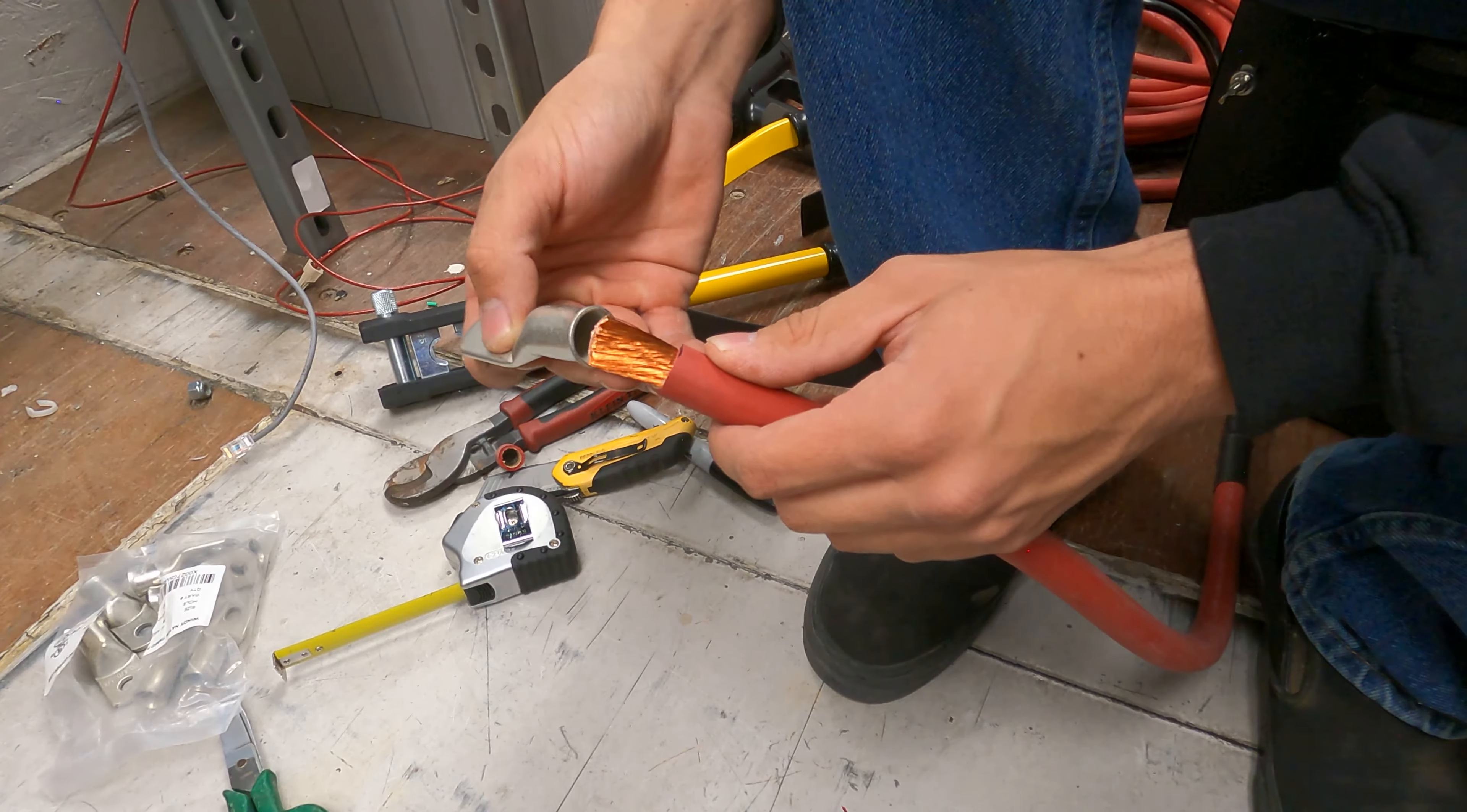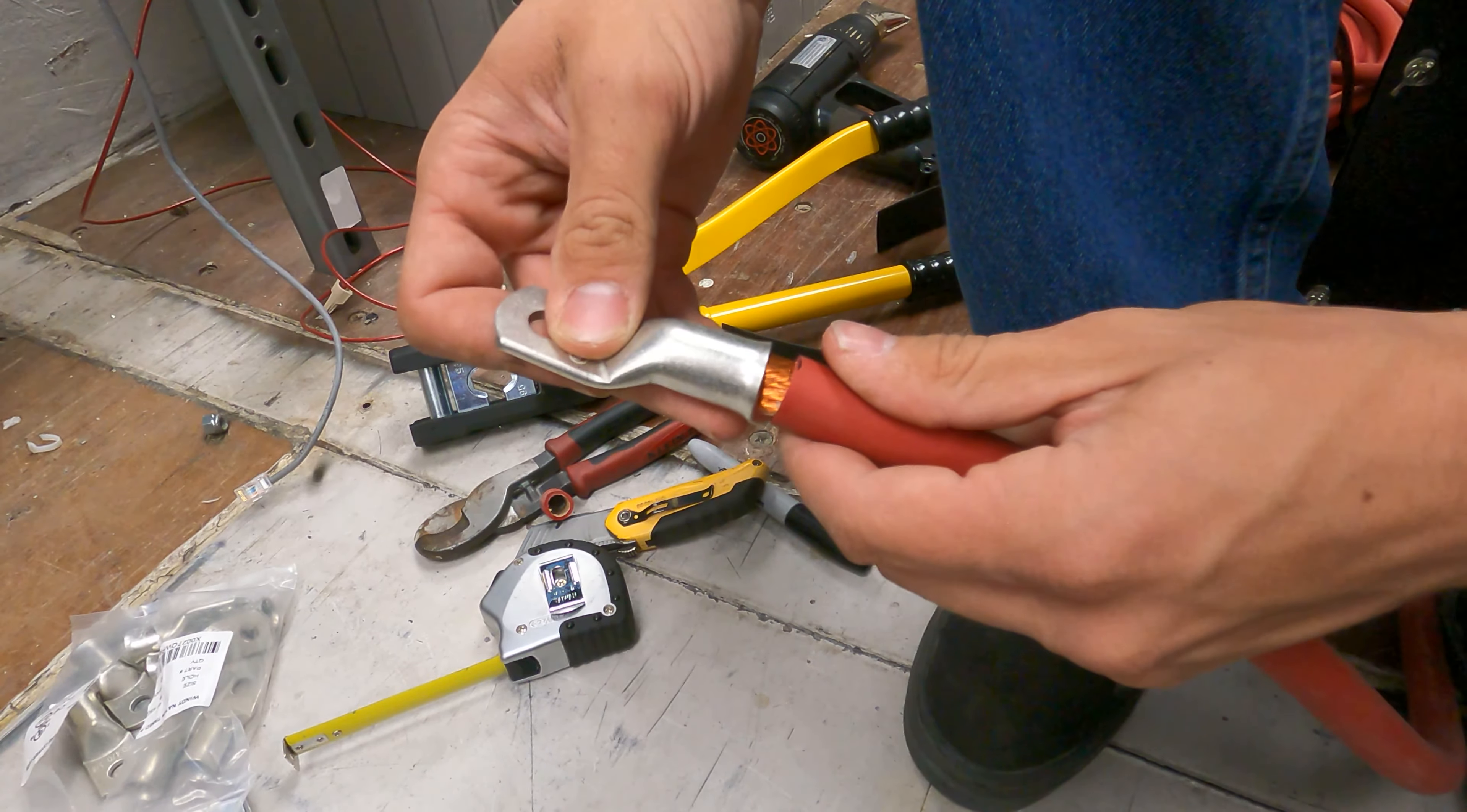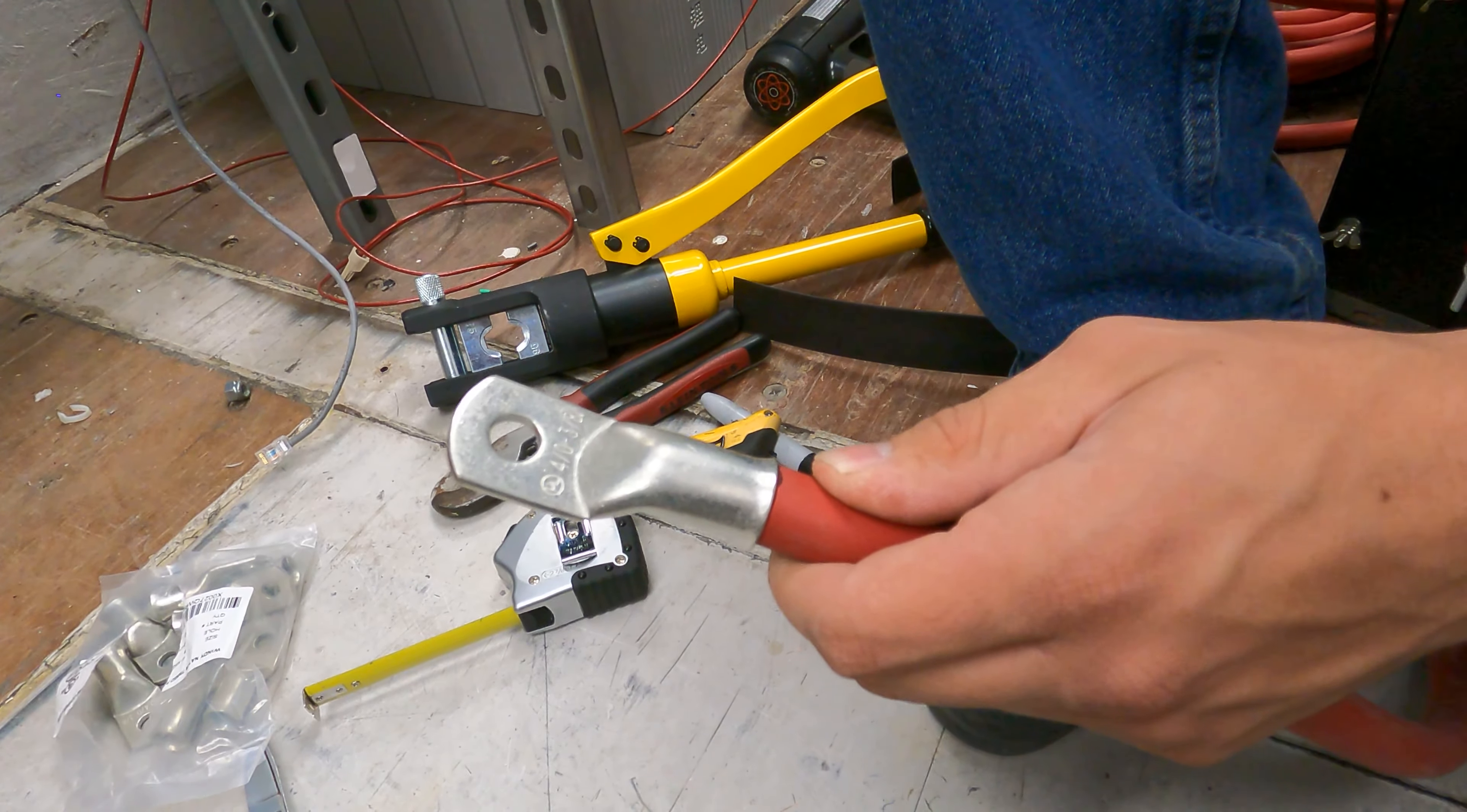So now that that's done, I can take my lug and be very careful and make sure I have all the strands in there and it should go on there just like that. At this point, we're ready to make the crimp.